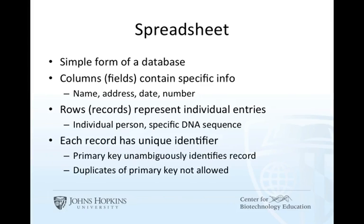Our last definition is of a primary key. Each record in a database should contain a unique identifier. It's often numerical or alphanumerical — alphanumerical simply means mixed letters and numbers. There should be no duplication when it comes to a primary key. One identifier should represent one, and only one, record. We will see examples shortly.